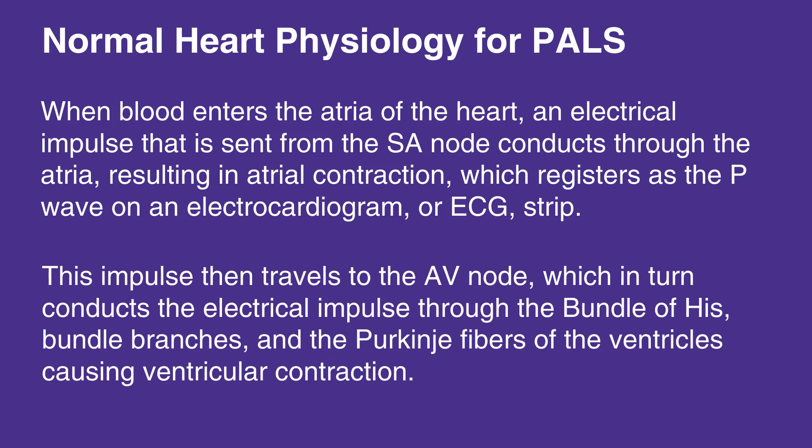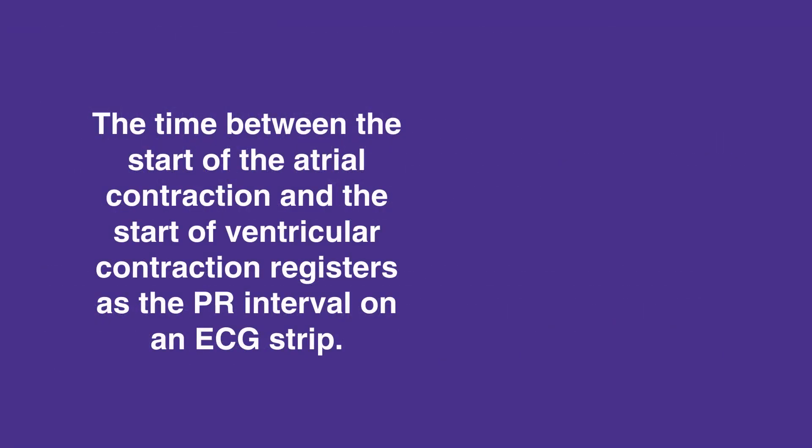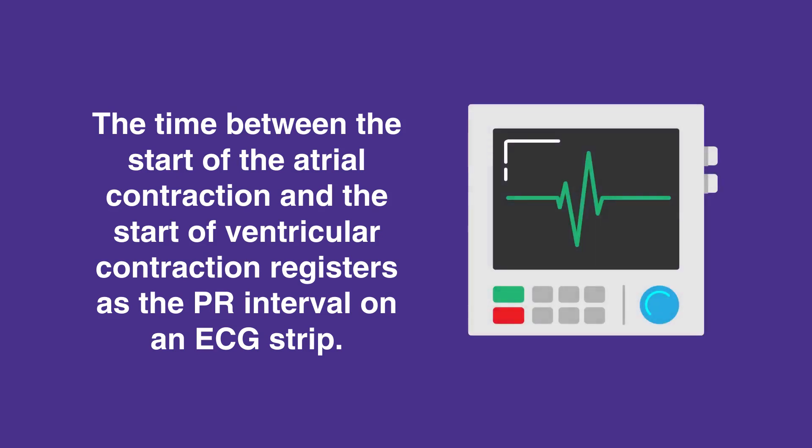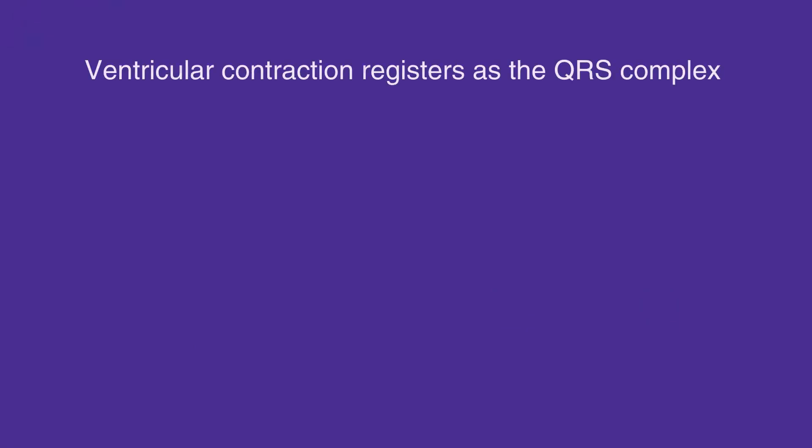This impulse then travels to the AV node, which in turn conducts the electrical impulse through the bundle of HIS, bundle branches, and the Purkinje fibers of the ventricles, causing ventricular contraction. The time between the start of the atrial contraction and the start of ventricular contraction registers as the PR interval on an ECG strip. The ventricular contraction registers as the QRS complex.